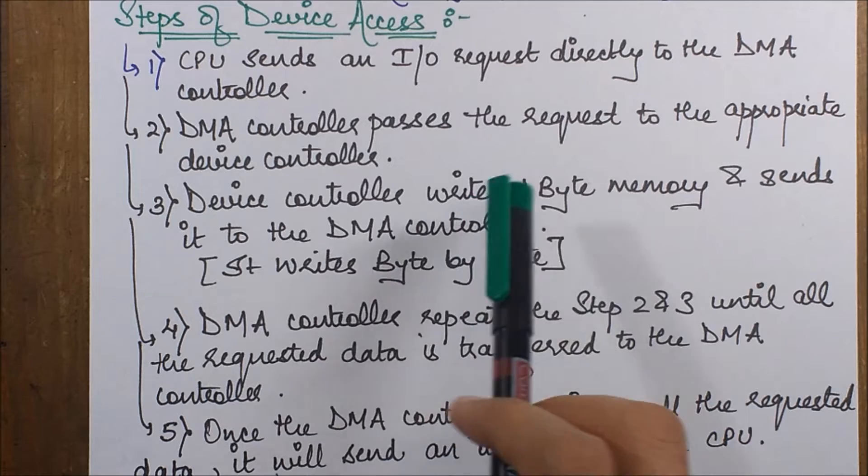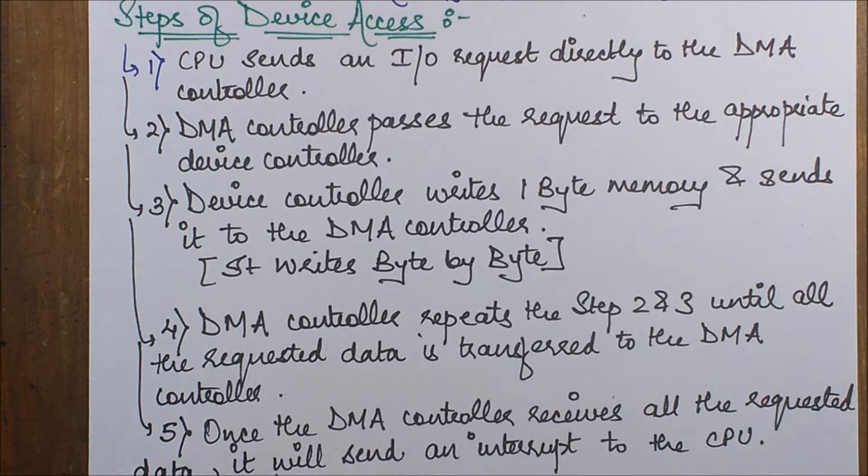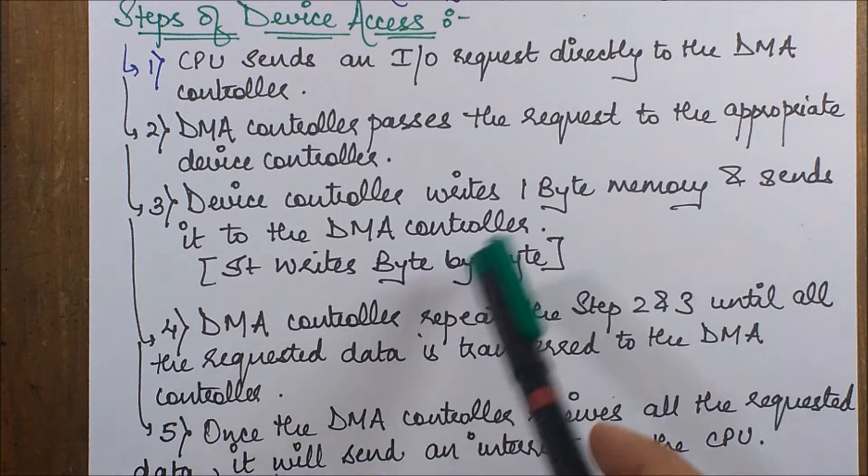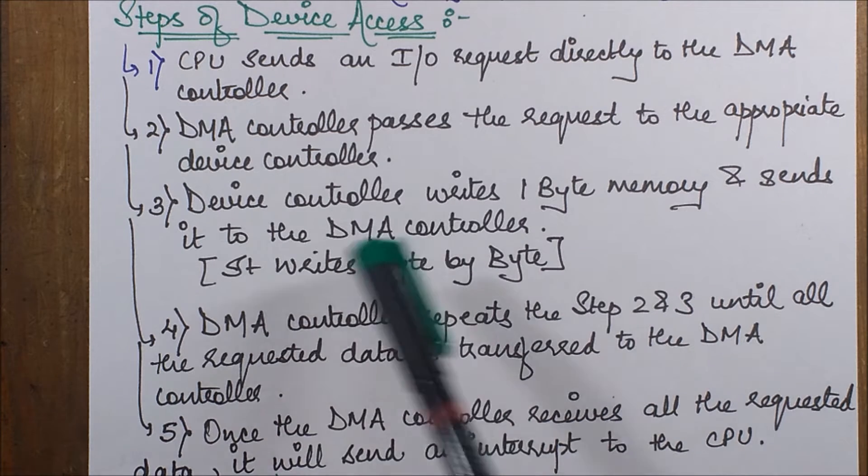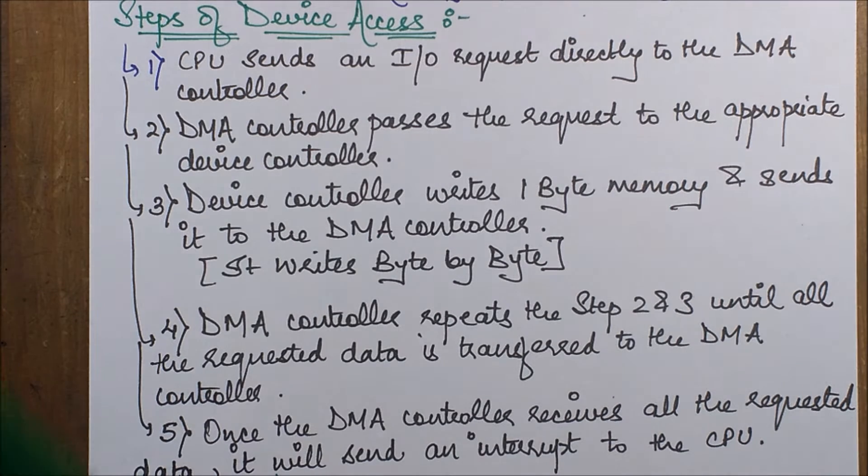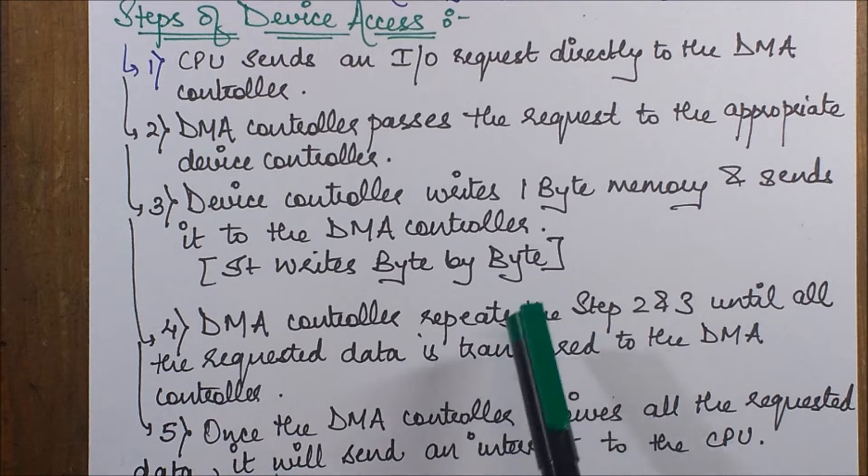Next, the device controller writes one byte of memory and sends it to the DMA controller. It writes byte by byte, so it is only allowed to write one byte at a particular time instant.